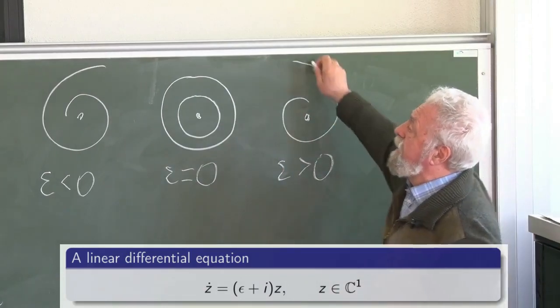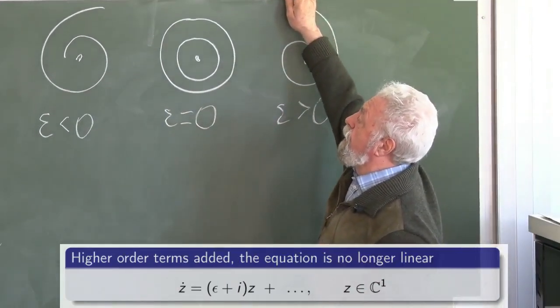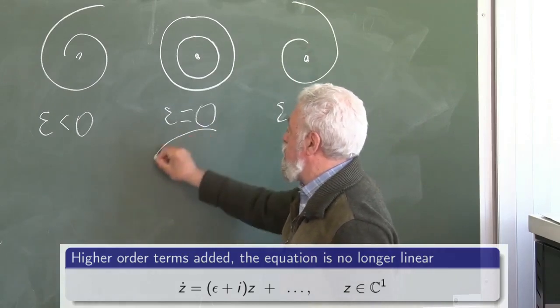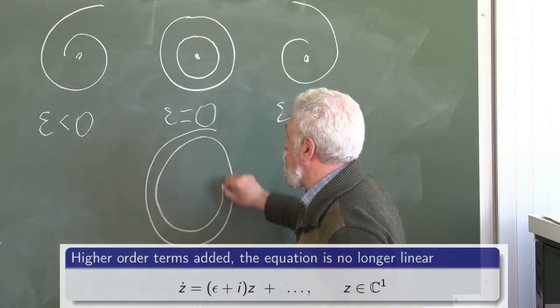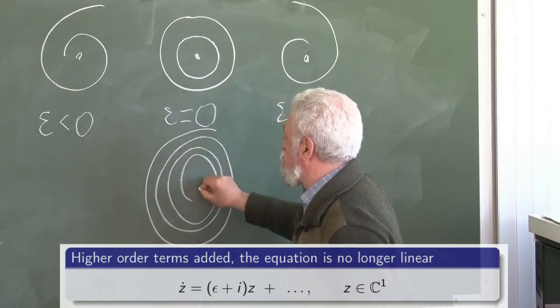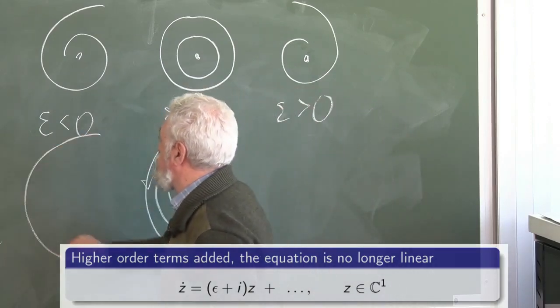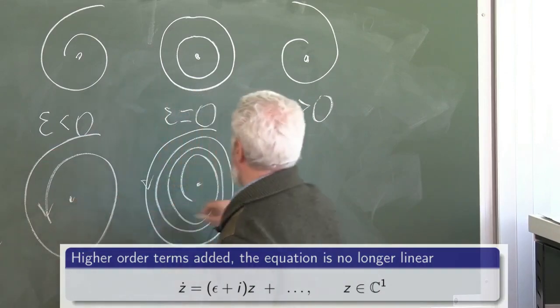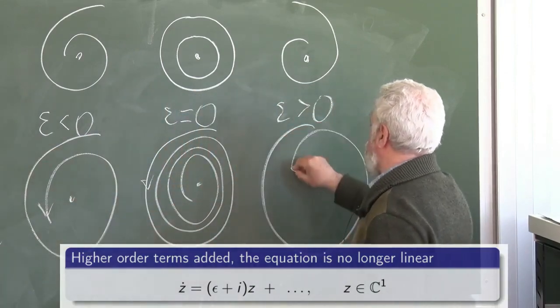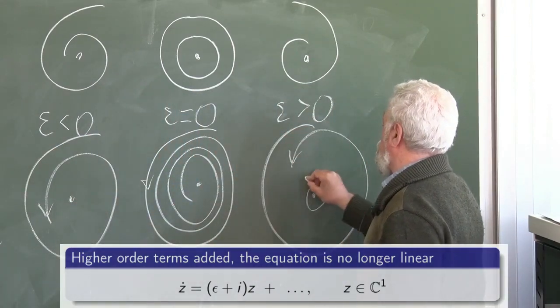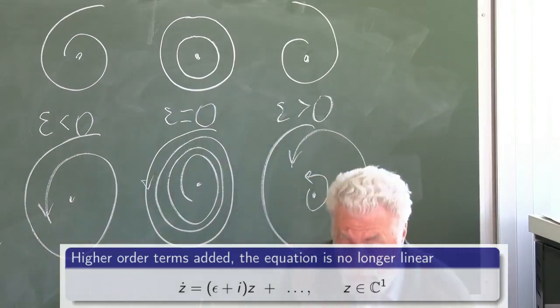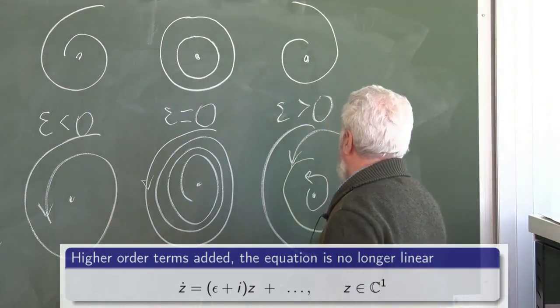What if we add nonlinear terms? It may happen generically that this picture will become like this for epsilon equals 0. This one will preserve the same. And here a sort of miracle will happen. A limit cycle will be born.